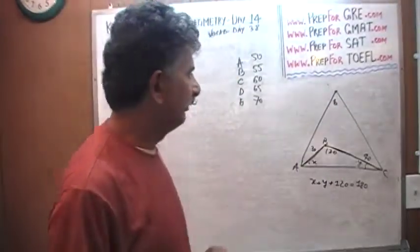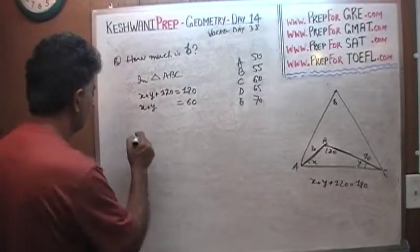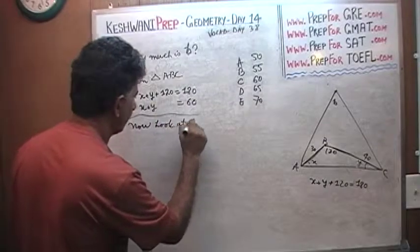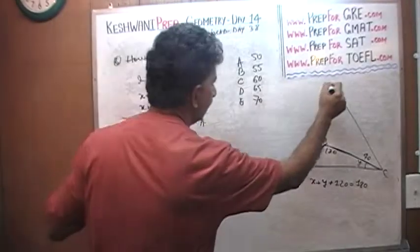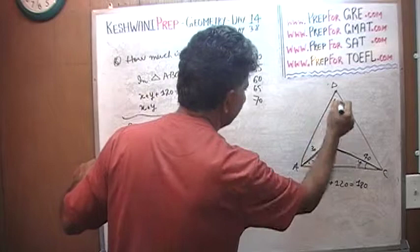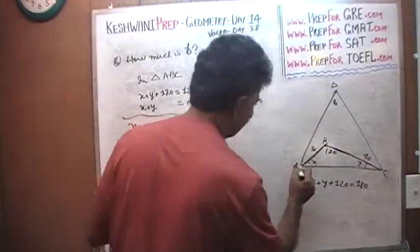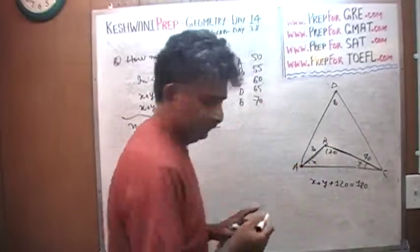We can use that information now. The question is, how much is B? Well, now look at the triangle A, D, C. The large triangle.